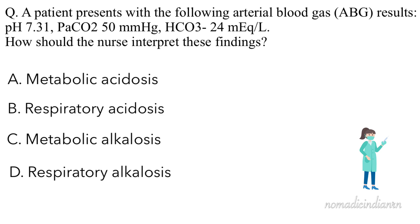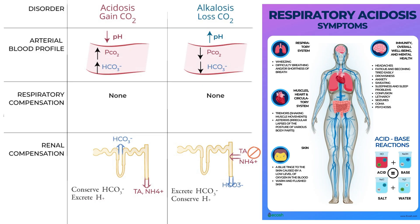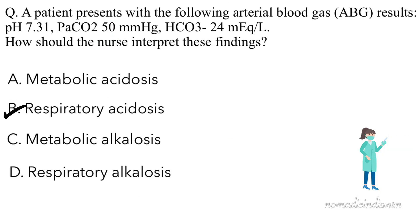Pause the video, think about the question wisely and then resume. The correct answer is option B — respiratory acidosis. The pH is below the normal range of 7.35 to 7.45, indicating acidosis. The partial pressure of CO2 is elevated, suggesting a respiratory origin. The bicarbonate is within normal limits, indicating no metabolic compensation. Therefore, these ABG results are consistent with respiratory acidosis.